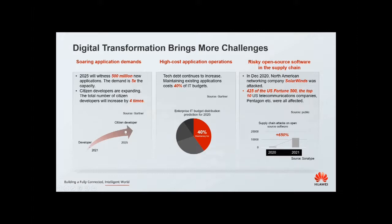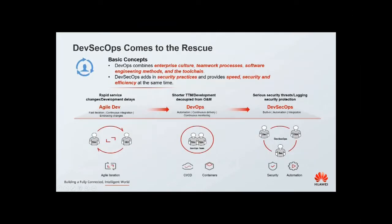So now DevSecOps comes to the rescue. What is DevSecOps? First, we have to understand DevOps. DevOps is not only a methodology — it evolves from agile development, software engineering methods, and combines software development and IT operations. It aims to shorten the development lifecycle and provide continuous delivery with high software quality. The keywords of DevOps are automation, continuous integration and delivery, and continuous monitoring. Based on the whole DevOps workflow, DevSecOps integrates security practices within the whole DevOps process.